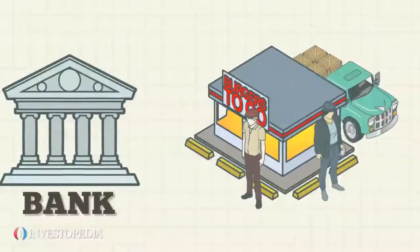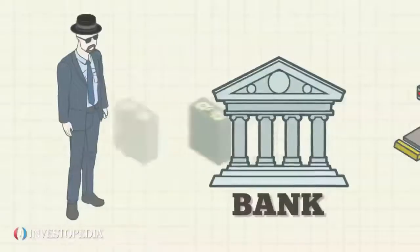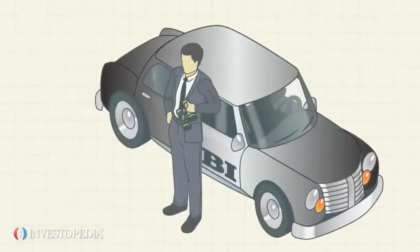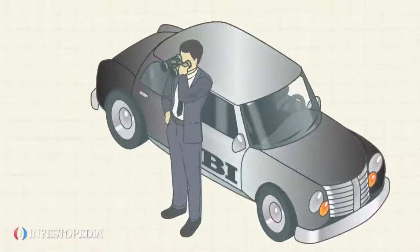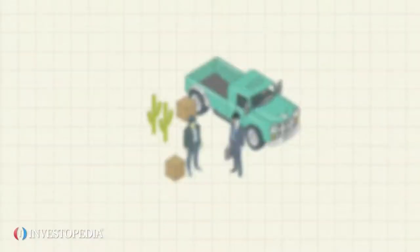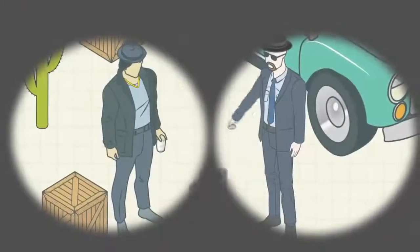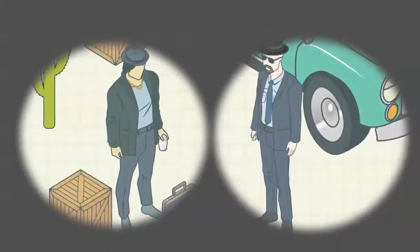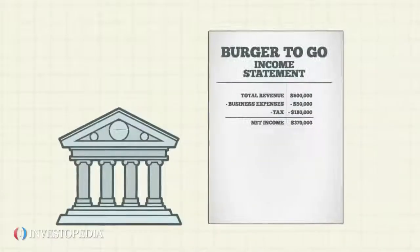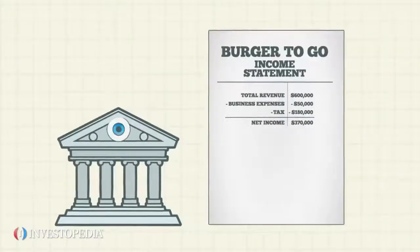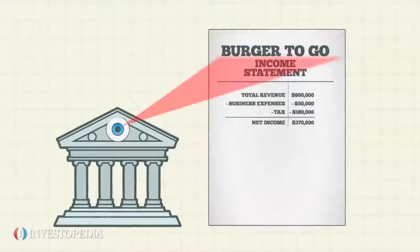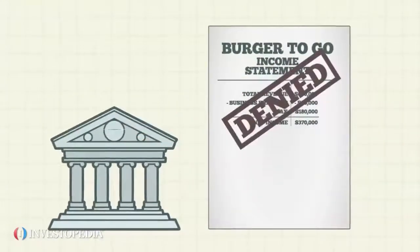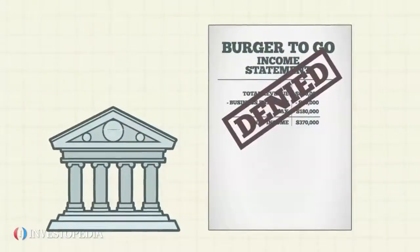Then they can distribute the funds to the owners out of the restaurant's bank account. The government has become increasingly vigilant in its efforts to combat money laundering by passing anti-money laundering regulations, which require financial institutions to have systems in place to detect and report suspected money laundering activities.